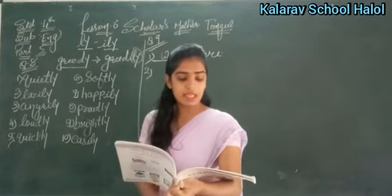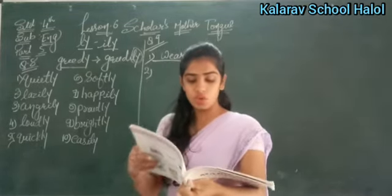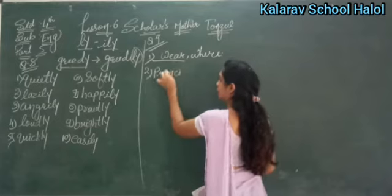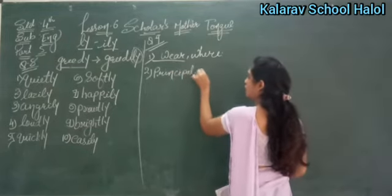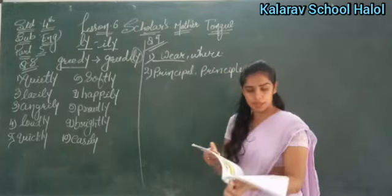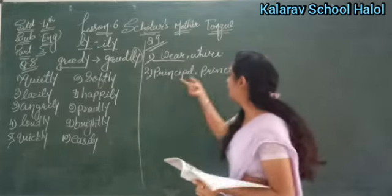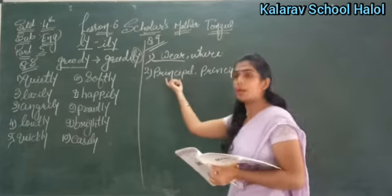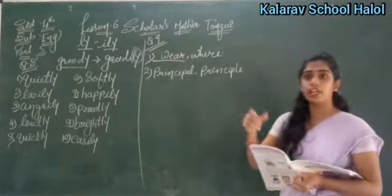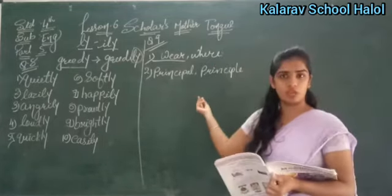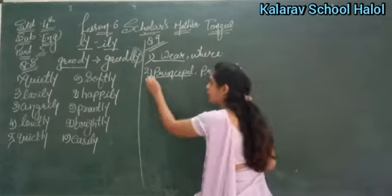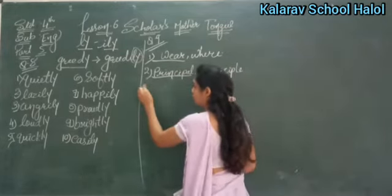अब next: 'Mr. Manda is the principal of our school.' तो principal दो दिये हैं — एक है P-R-I-N-C-I-P-A-L और दूसरा है principal (principle)। ये principal का मतलब होता है school के principal, और ये principle का मतलब होता है rules या किसी के principles होते हैं। तो यहाँ पे school के principal की बात हो रही है, so this word will be used here।